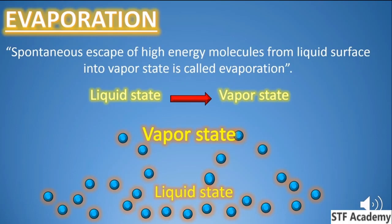What happens in this process? The high energy molecules in the liquid are converted into vapors. This process is evaporation — the conversion from liquid state to vapor state. In the liquid state, molecules are closely packed, but in the vapor state molecules are more spread out.